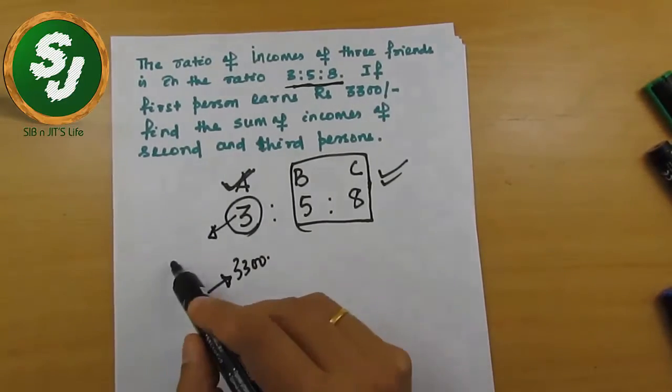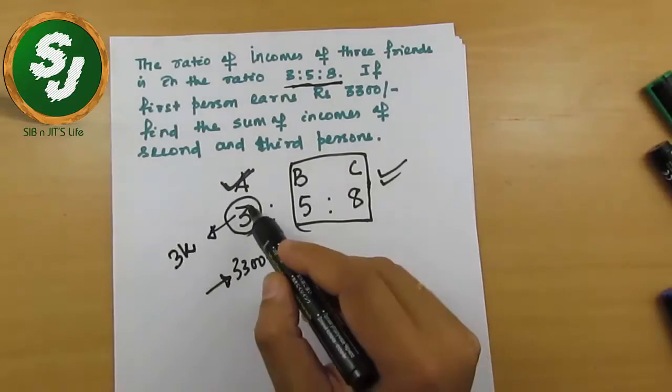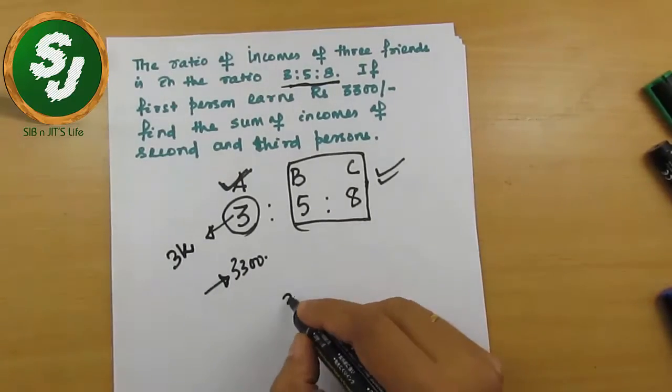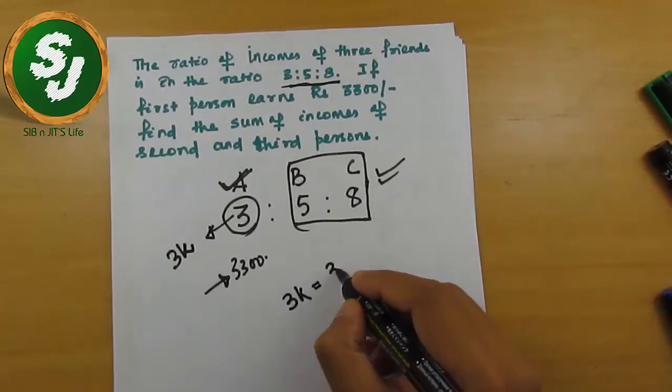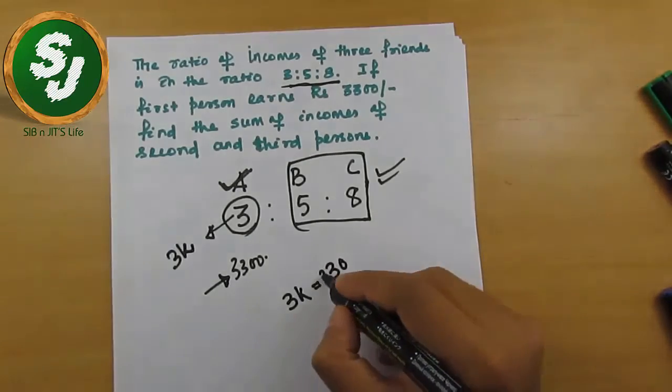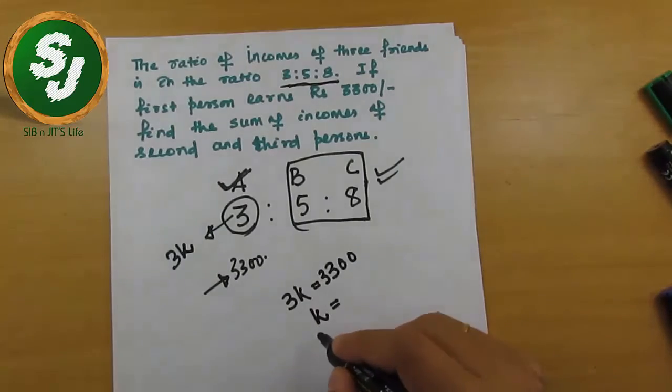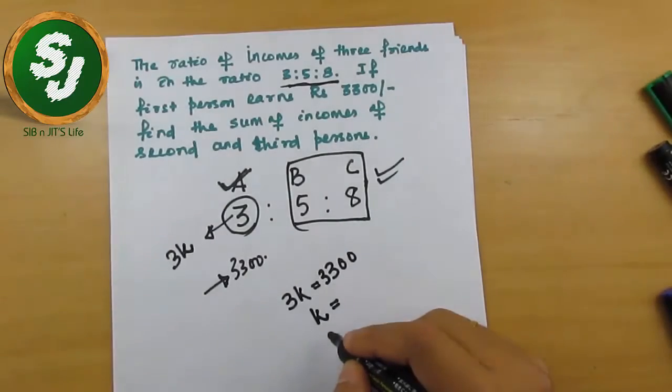Here the given data is 3300. His income is 3K, and in the question it is given 3K equals 3300. So we have to find the value of K. Once this K is found out, the question is over - in the next step itself you can answer the question very promptly.